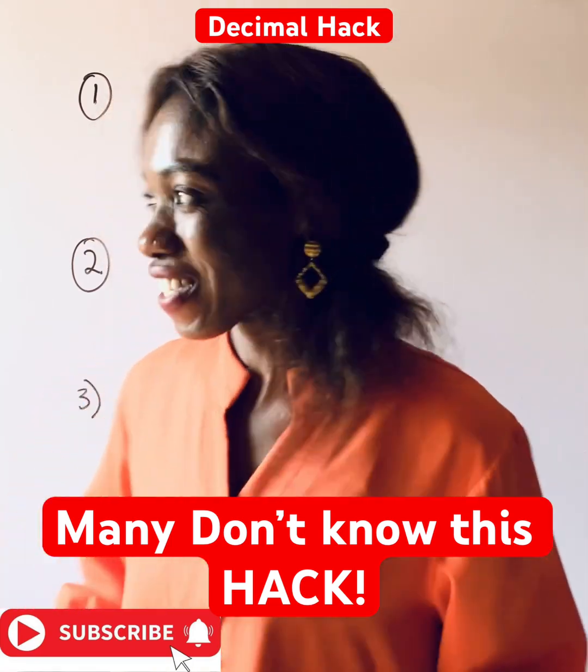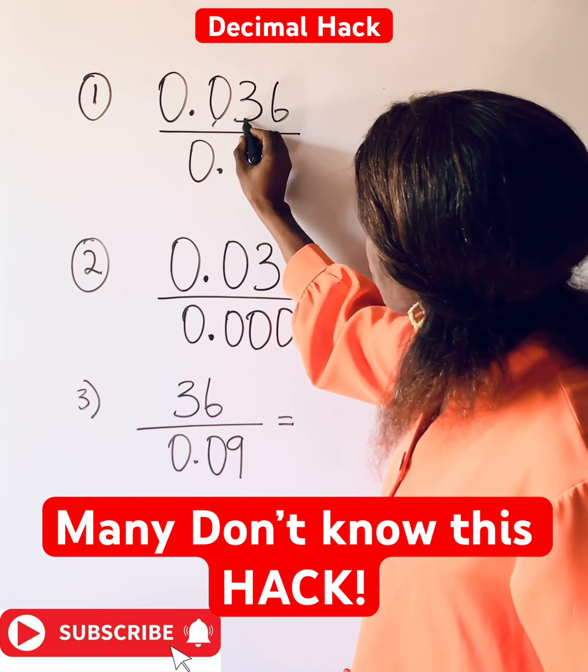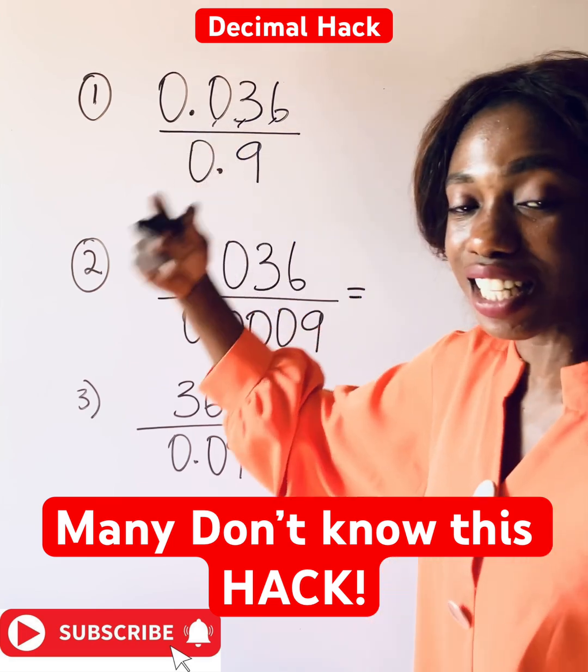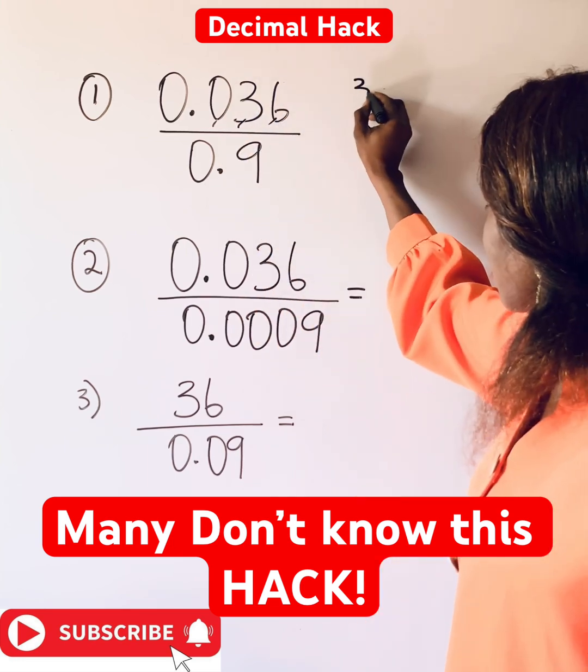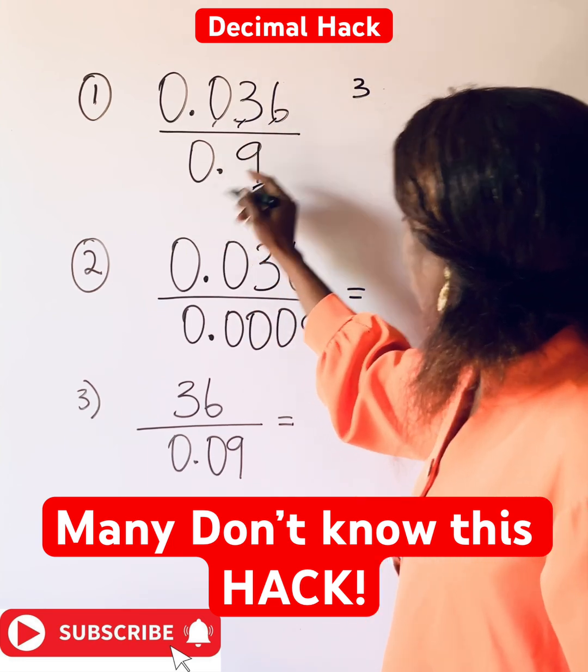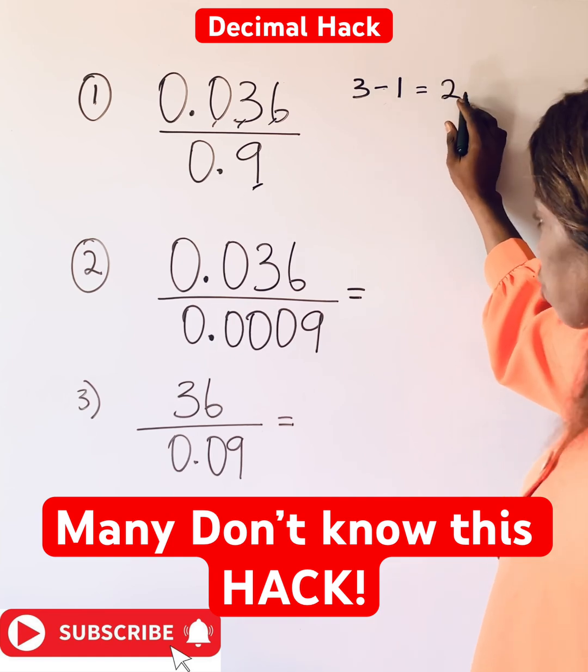Divide your decimals in seconds. Now look at what you have. You notice that we have three numbers after the point - we call it decimal places. So this has three decimal places, so we have three. This has one after the point, so you have one. You subtract, and when you subtract you have two.